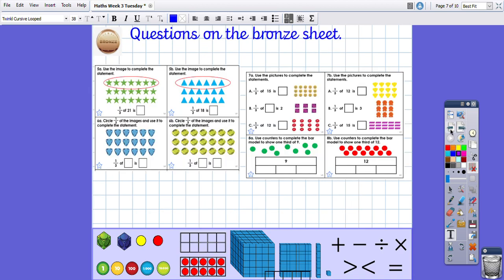So today, bronze, you are going to use the images to complete the statement. So they've circled some of the shapes for you and they need you to tell them what a third of the amount is. So count up in the circles. Then your next set, you need to circle them yourselves and then complete the statement. Then you need to use the pictures that they have given you, their little arrays to complete the question. So one third of 15 is. So you will use the smiley faces to help you work it out and write your answer in the box. And then a bit like my big chocolate bar, you need to use the counters to complete the bar model. So you need to share the counters out to find a third.